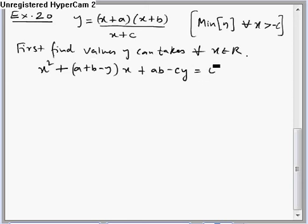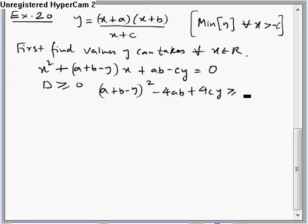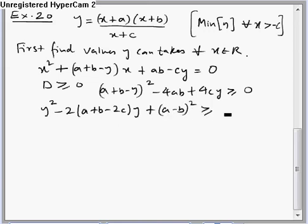Now as x can take all real values, x belongs to R, we put D greater than equal to 0. And D greater than equal to 0 will give us inequality in terms of y. Now simplify this inequality in terms of y and express in quadratic form of y.